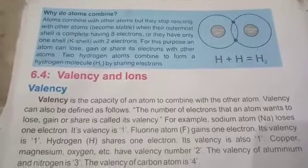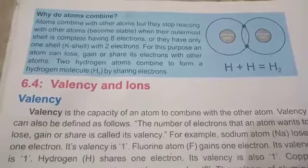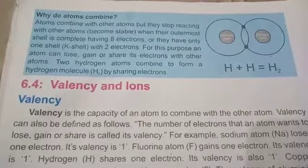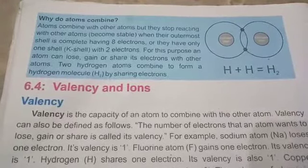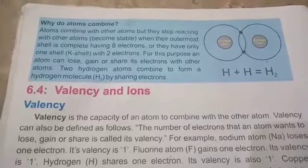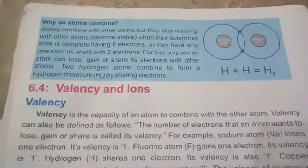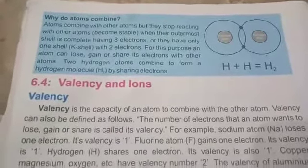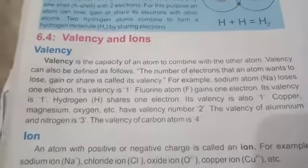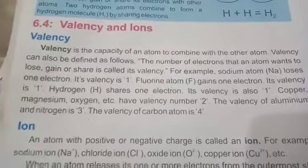For example, two hydrogen atoms are given. The hydrogen atom has atomic number one. Both atoms will share their electrons, and in this way they will become stable by having two electrons in their valence shell. What is valency? Valency is the capacity of atoms to react. It depends upon the number of electrons in the outermost shell.